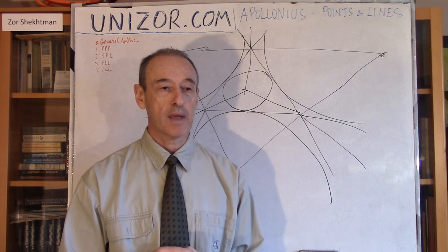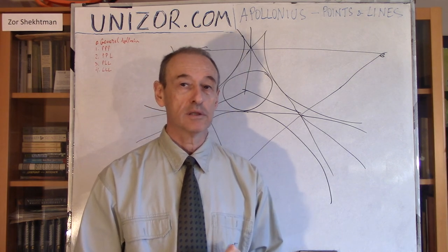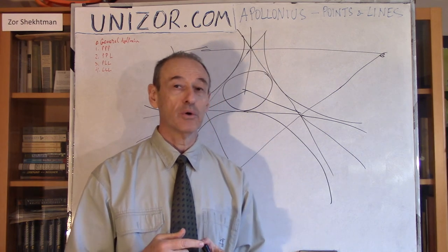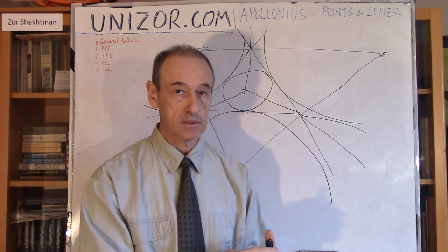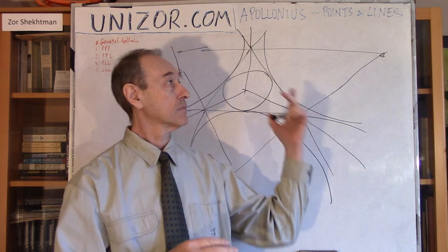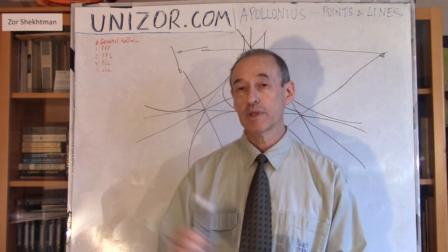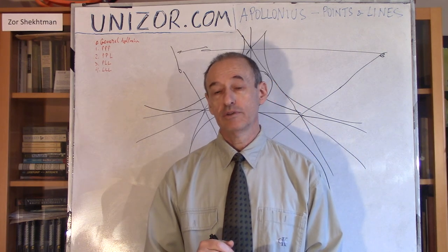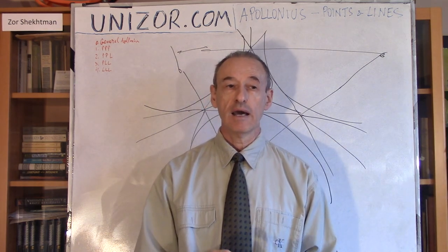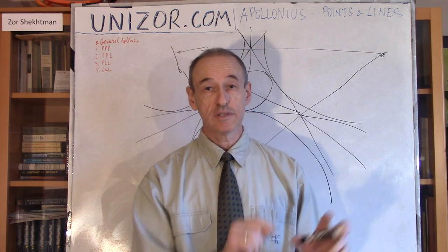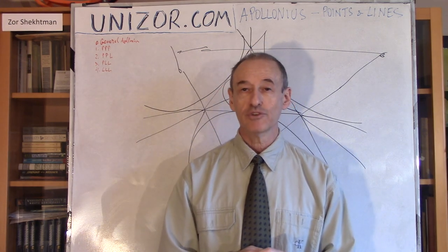These are the three simplest Apollonius problems, where only points and lines are used as givens. In the next lecture I will talk about the transformation of inversion — symmetry relative to a circle — which will allow us to reduce problems where circles are given (one, two, or three circles) back into line-and-point problems. I suggest you read the notes for this lecture on unizor.com. The notes include a couple of statements left as exercises for you to prove yourself — I strongly suggest you try them. Thanks very much, and good luck.